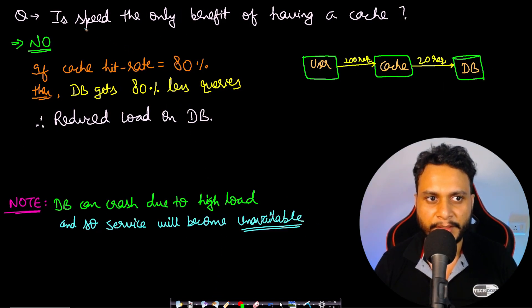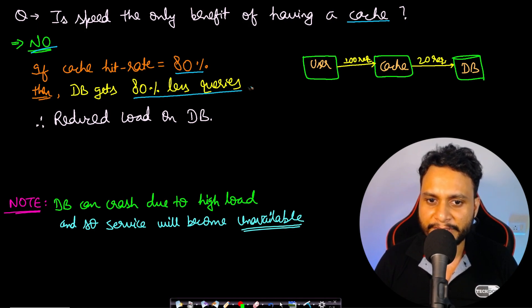Is speed the only benefit of having a cache? The answer is no. Let's assume that if the cache hit rate is 80%, then the DB gets 80% less queries, because if the user actually asks 100 requests from the cache, then 80 requests are given from the cache back to the user without even referring to the database, and only 20 requests are sent to the database.